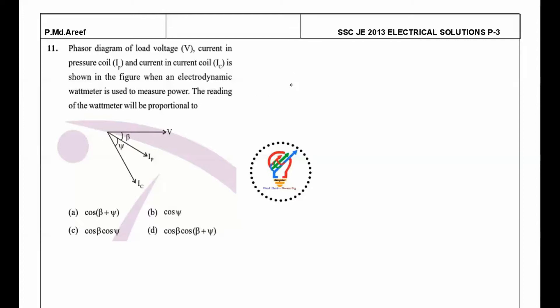So in this case, the reading of the wattmeter P is equal to V into the angle between V and the pressure coil current, that is cos beta, into the current in the current coil IC. The angle between the pressure coil and the current coil is cos phi, which is nothing but V into IC into cos beta cos phi. So from this we can say that C is the right answer.